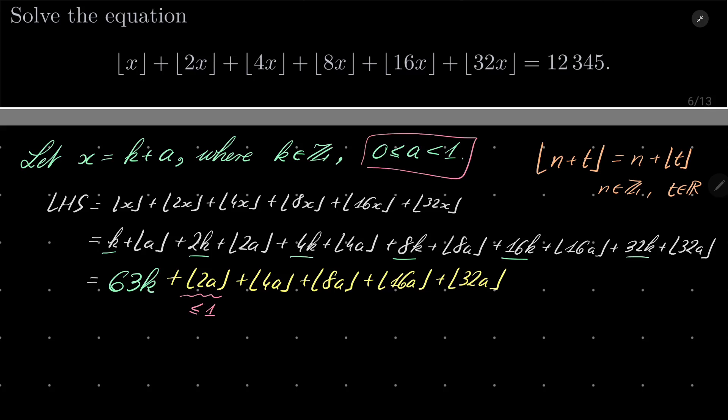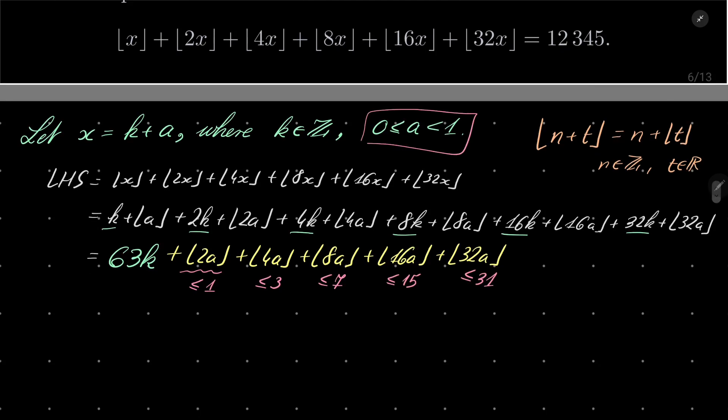Every floor is greater than or equal 0 here, so it's less than or equal 1. It cannot be 2 because a is strictly less than 1. This number is strictly less than 4, so it's less than or equal 3. This is less than or equal 7, less than or equal 15, and this is less than or equal 31.